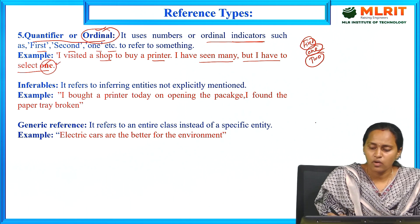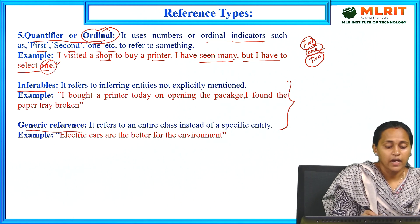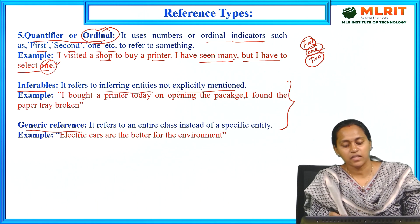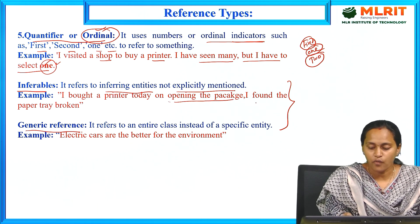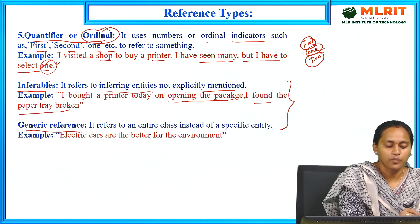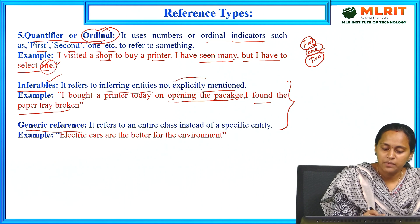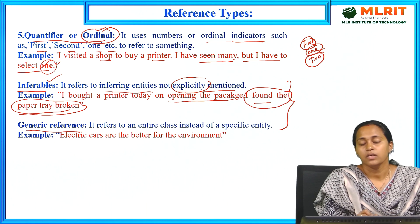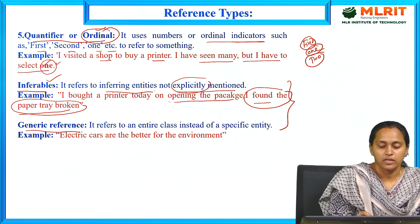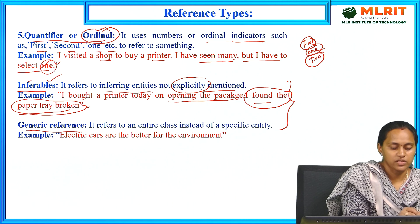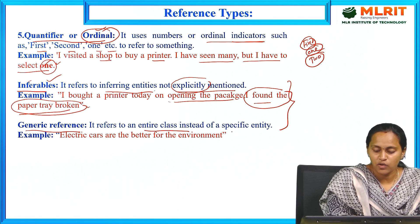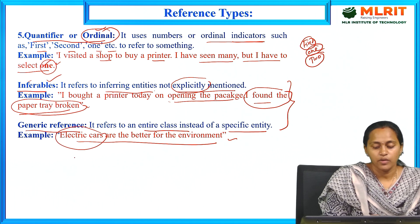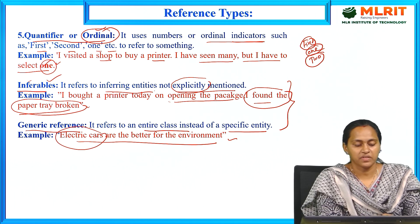Some other concepts in reference are inferables and generic references. Inferable reference refers to inferring entities not explicitly mentioned. Example: 'I bought a printer today. Opening the package, I found the paper tray broken.' The paper tray is inferable from the printer context but not explicitly mentioned. Generic reference refers to an entire class instead of a specific entity. Example: 'Electric cars are better for the environment.' Here 'electric cars' refers to the entire class, not one specific car.